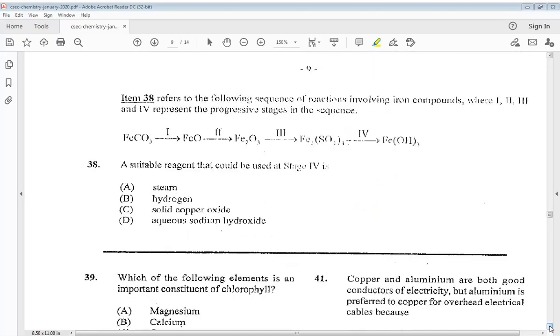Item 38 refers to the following sequences of reactions involved in iron compounds where 1, 2, 3, and 4 represents the progressive stages in the sequence. A suitable reagent that could be used at stage 4. A steam, B hydrogen, C solid copper oxide, or D aqueous sodium hydroxide. So the answer would be D.